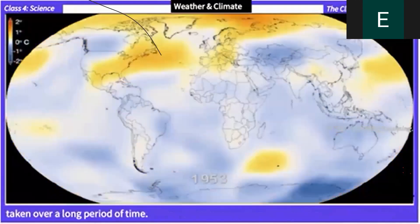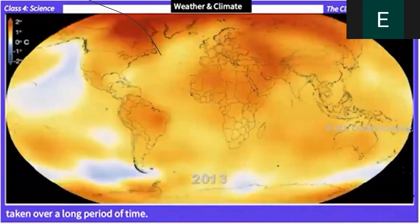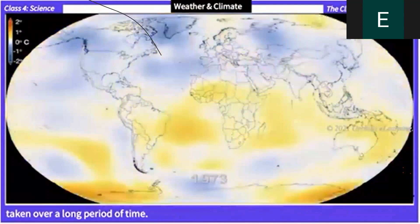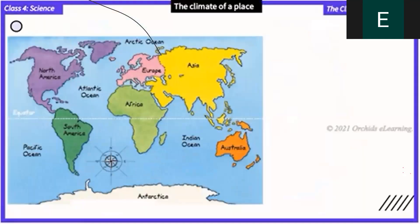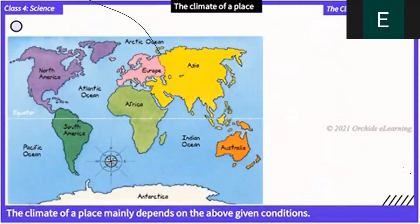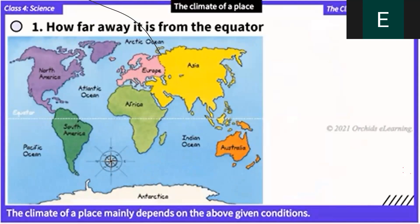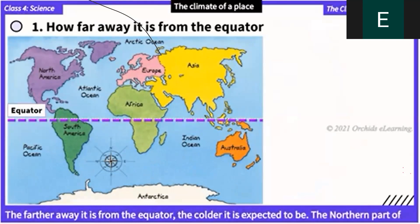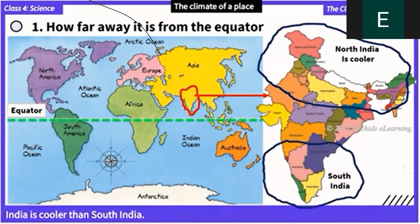The climate of a place mainly depends on several factors. Number one: how far away it is from the equator. The farther away it is from the equator, the colder it is expected to be. For example, the northern part of India is cooler than south India.